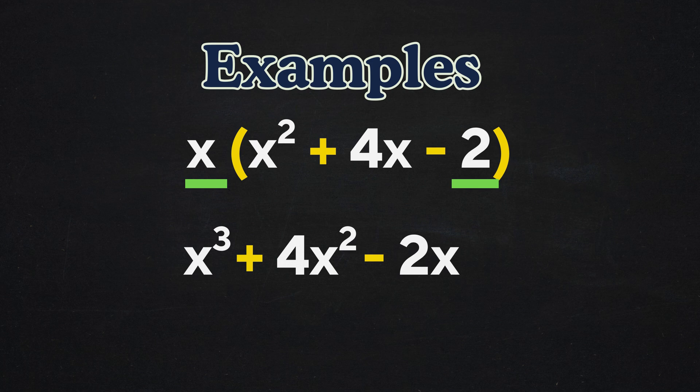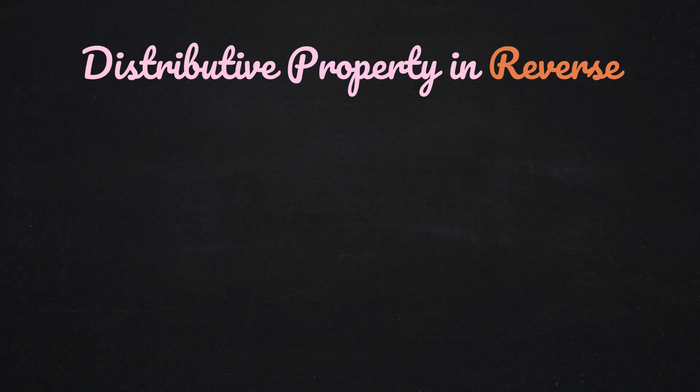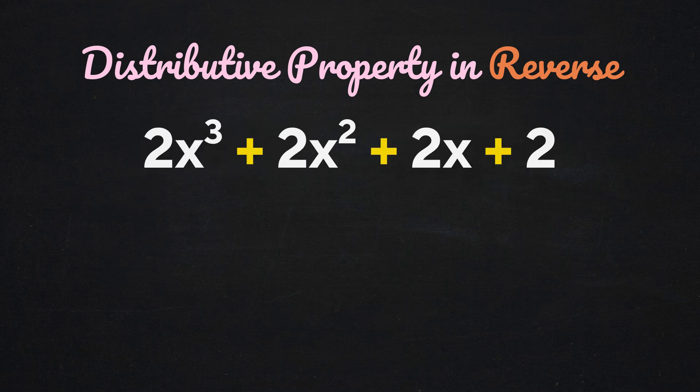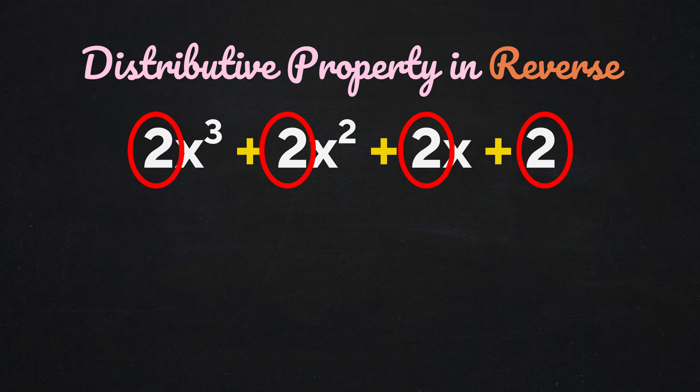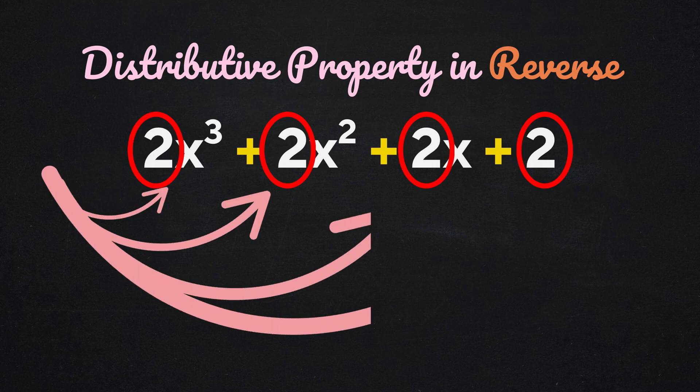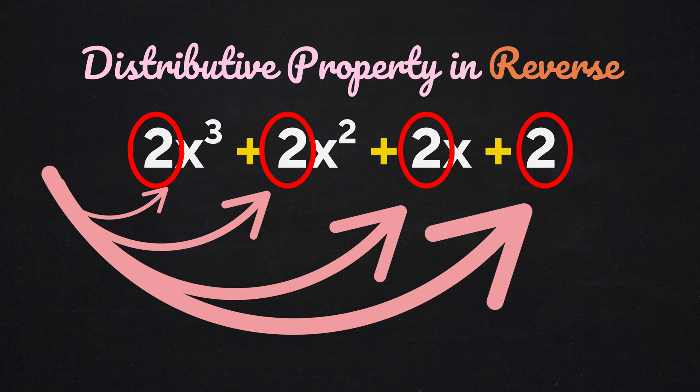Now that you've seen how to apply the distributive property, you might wonder, can we reverse the process and undistribute a factor? The answer is yes. Take this polynomial, 2x cubed plus 2x squared plus 2x plus 2. Notice that each term has a common factor of 2. It looks like someone already applied the distributive property to distribute a factor of 2 to each term.